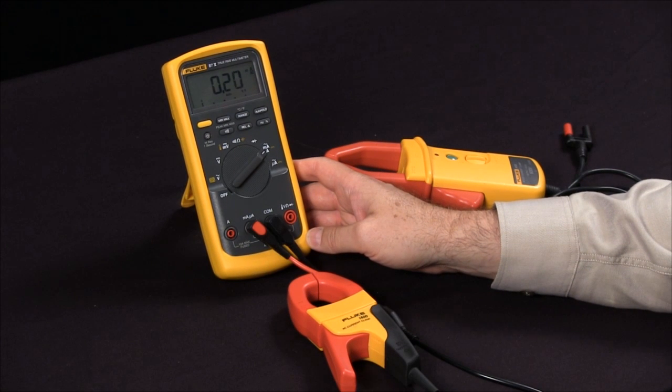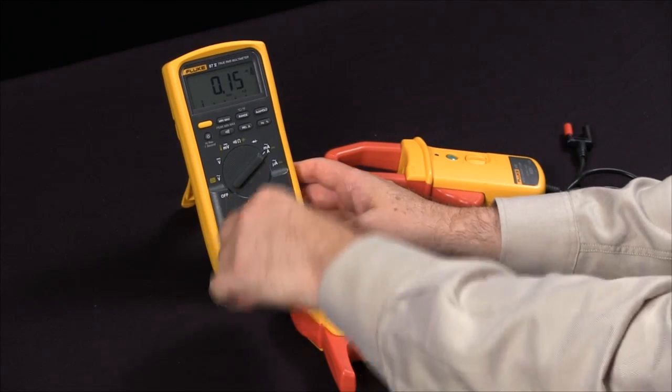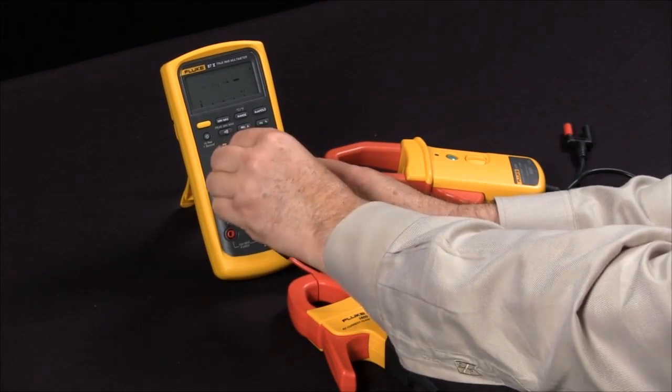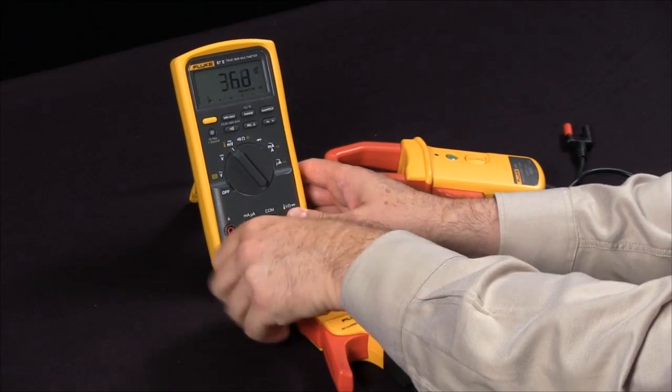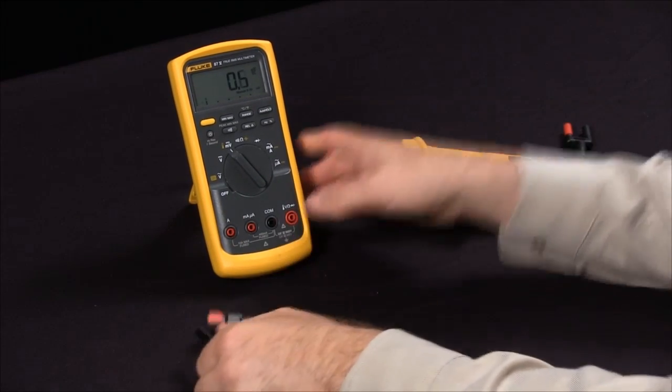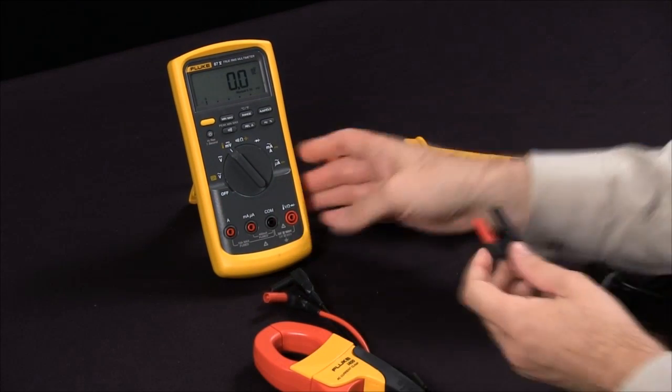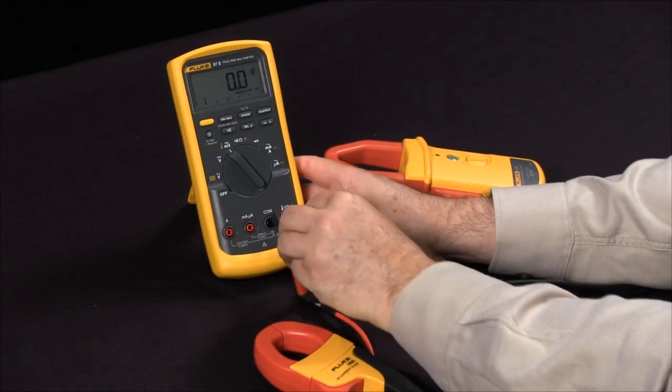When you're measuring AC and DC it's a little different setup, so what you want to do is set your meter to millivolts, unplug the jacks, and in this case you're going to go into your voltage as well as your common inputs.